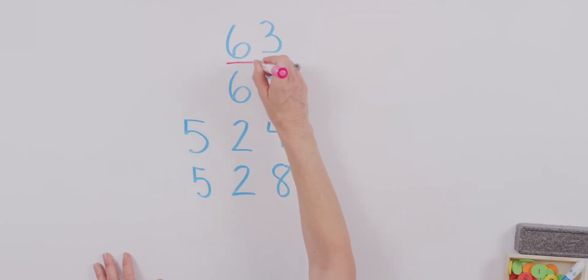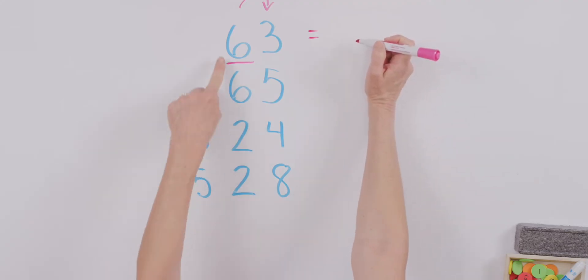Underline the digit, look next door. If it's five or greater, add one more. If it's less than five, leave it for sure. Everything after is zero, not more. So we're going to leave the six as it is and we're going to put a zero in. Sixty is the nearest ten to the number sixty-three.